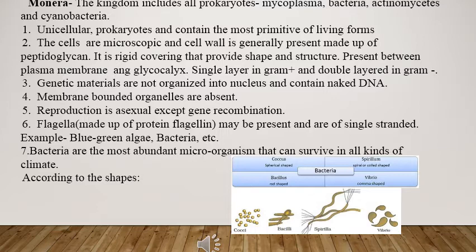It reproduces asexually without showing any variation, meaning without showing any gene recombination. Flagella, a whip-like or long thread-like structure, may be present as a single strand made up of the protein flagellin. Bacteria are the most abundant microorganisms present all over the earth in any climate.